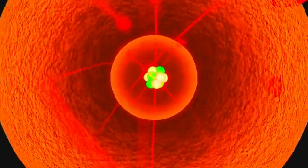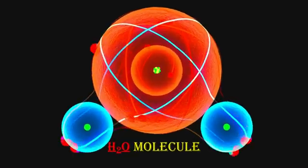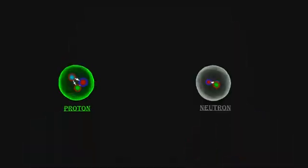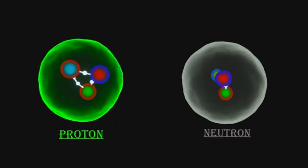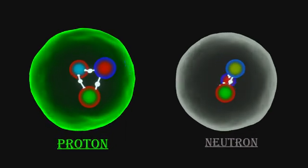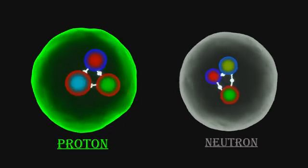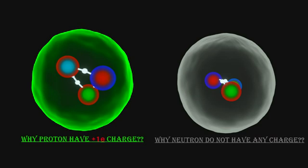In the previous video we saw how atoms and molecules are formed. Today we will talk about the proton and neutron and learn how they are formed, why protons have a positive charge, and why neutrons do not have any charge.